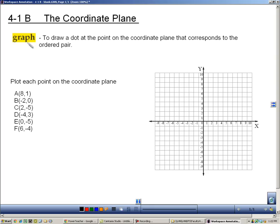Well, when you're dealing with a plane, the word graph is defined as to draw a dot at the point on the coordinate plane that corresponds to the ordered pair.